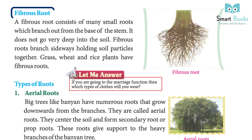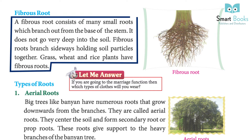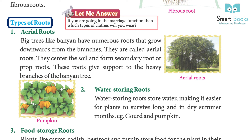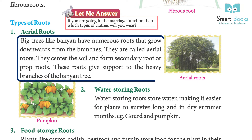A fibrous root consists of many small roots which branch out from the base of the stem. It does not go very deep into the soil. Fibrous roots branch sideways, holding soil particles together. Grass, wheat, and rice plants have fibrous roots.